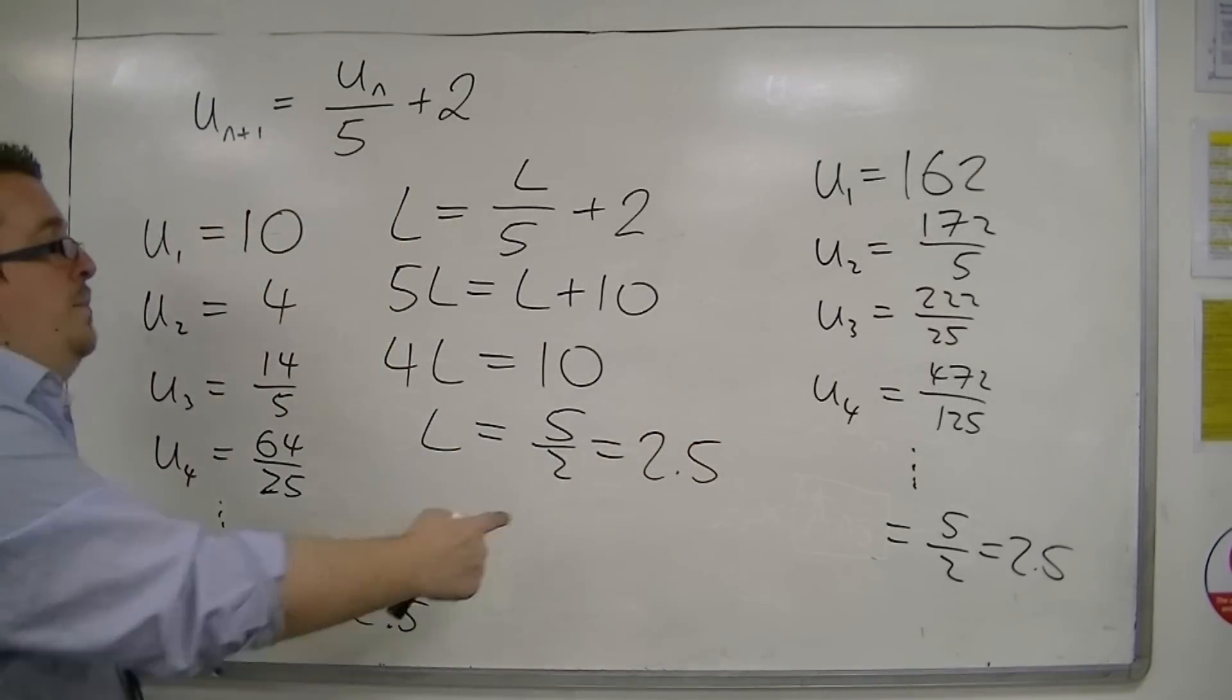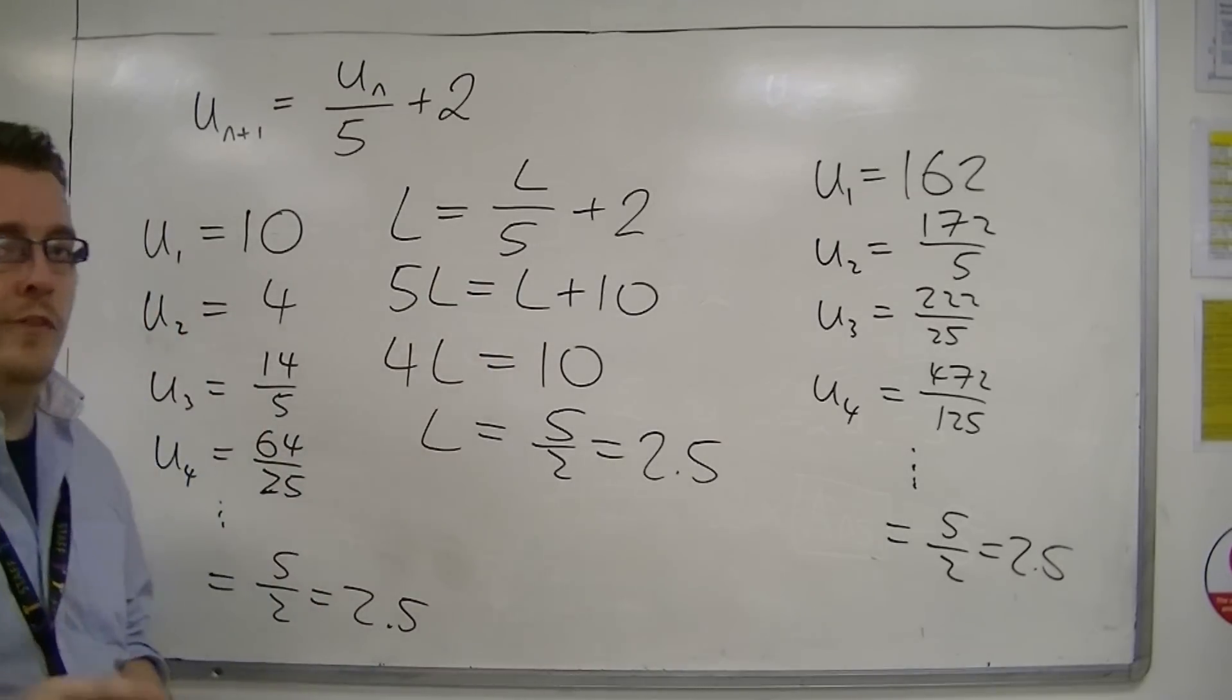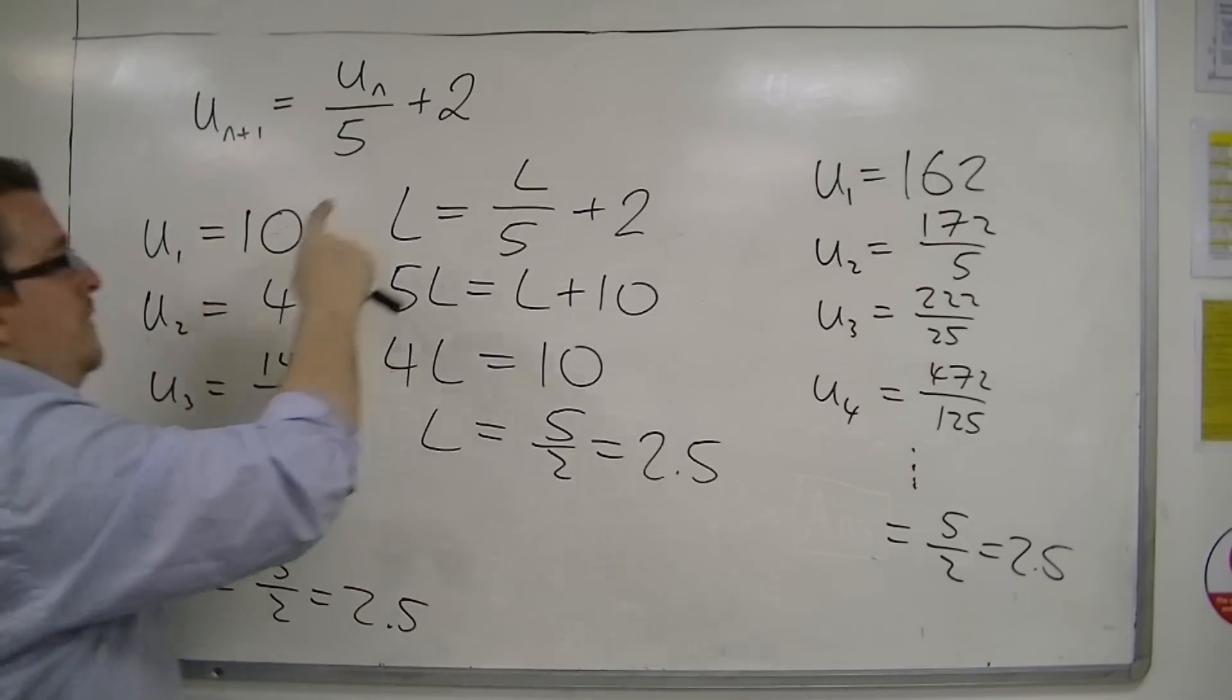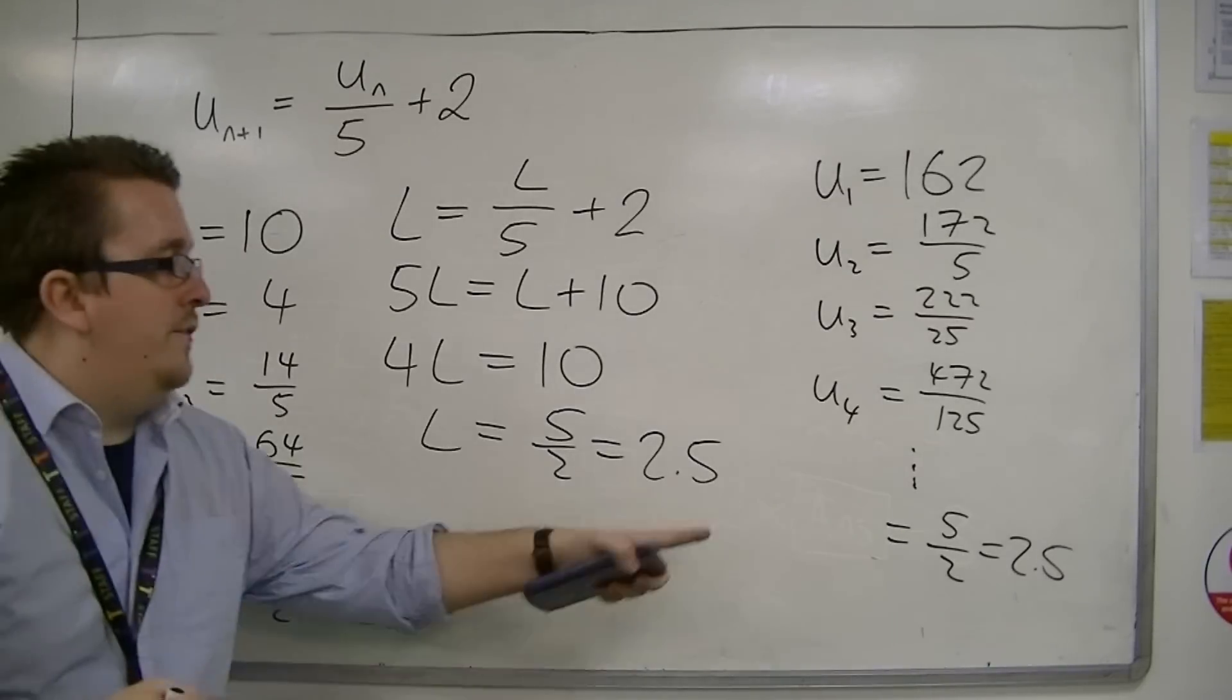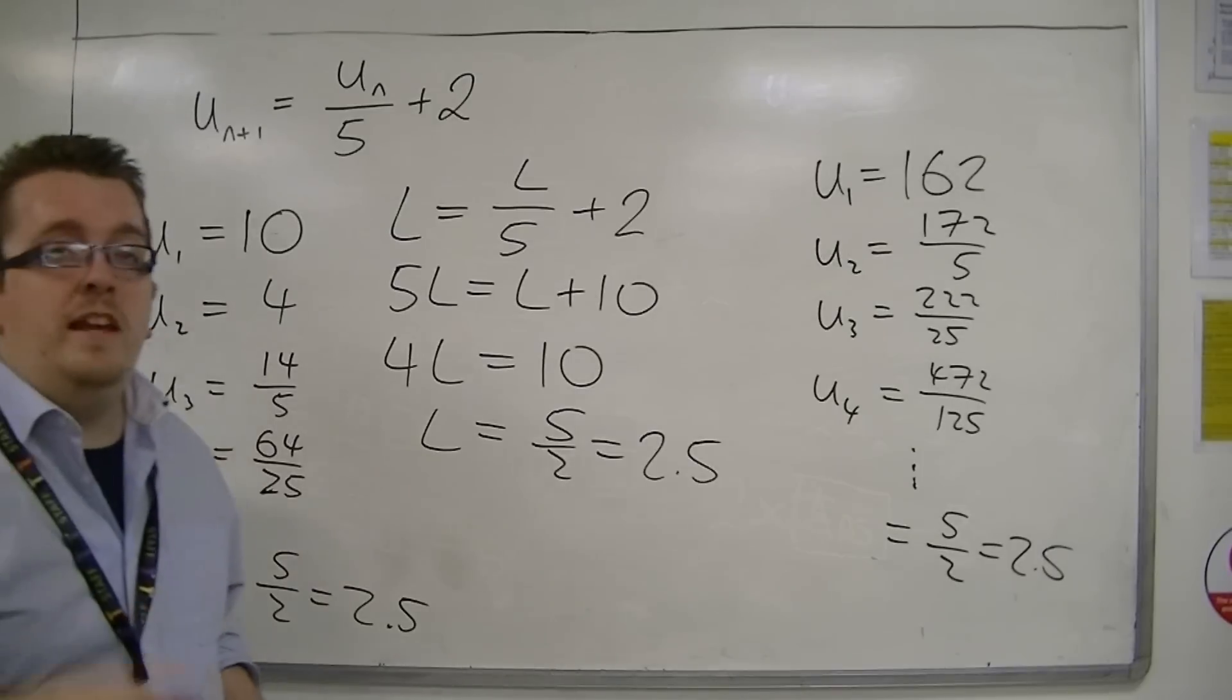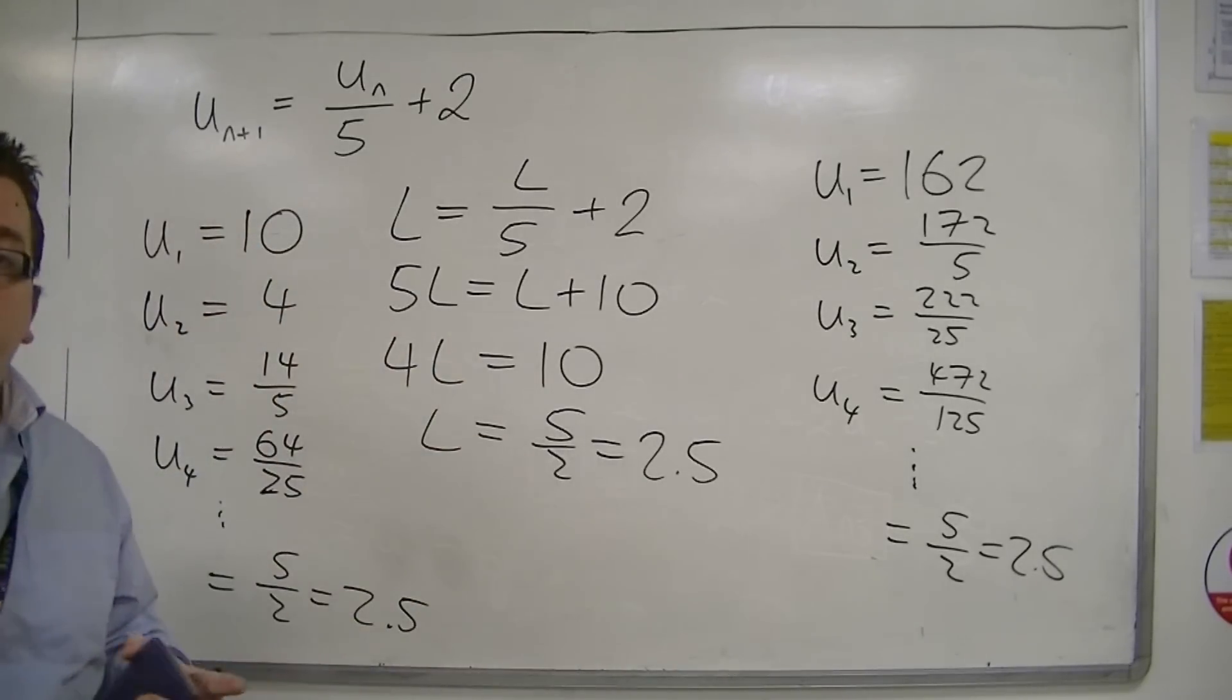This little bit of algebra can determine the limit of the sequence in question. As you can see, from different starting values, I arrive at 2.5. I want to note that this doesn't work for all recurrence relations, so be wary of that. But for those that it does, it's nice to see that both the algebra and what the calculator is saying agree.